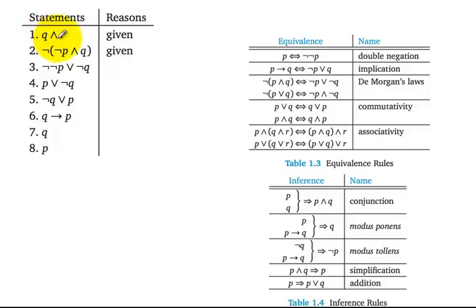Well, line 1 has something to do with R so that probably doesn't apply to line 3. I mean line 3 has only got P's and Q's in it. So let's look at line 2. How could we use these inferences and equivalences to go from line 2 to line 3?